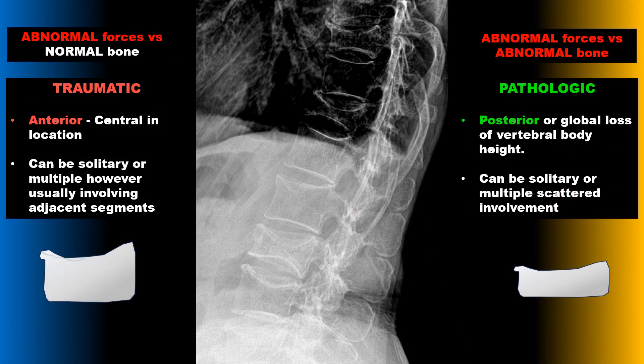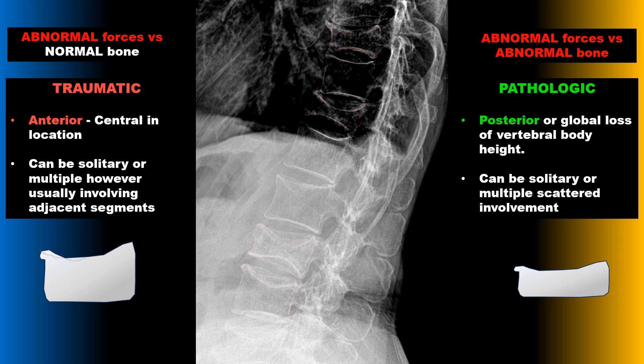There are traumatic compression fractures, which are abnormal forces on normal bone, and pathologic fractures, which are abnormal forces on abnormal bone. Traumatic fractures usually have a loss of anterior to central vertebral body height and spare the posterior vertebral body. They are usually solitary or involve multiple adjacent segments. With pathologic fractures, you can see posterior or global loss of vertebral body height, and involvement can be scattered throughout the spine.